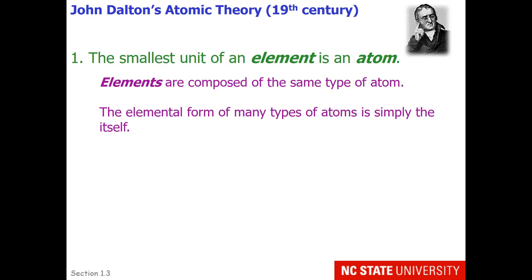Elements are composed of the same type of atom, and the elemental form of many types of atoms is simply the atom itself. For example, if you have one atom of neon, it contains all the properties of a lot of neon. One neon atom is representative of the qualities of the element neon.